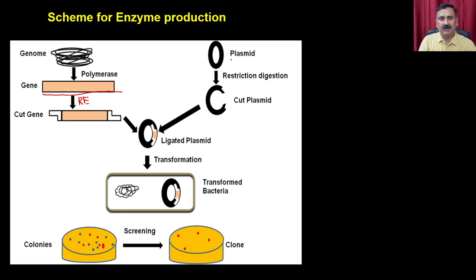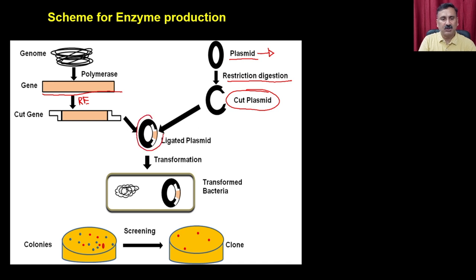The same restriction digestion is done for the vector — in this case we have taken an example of a plasmid, which is the bacterial vector. You perform ligation and that is how you get the recombinant clone. This recombinant clone has to be delivered into the suitable host so that you can use it for protein production.